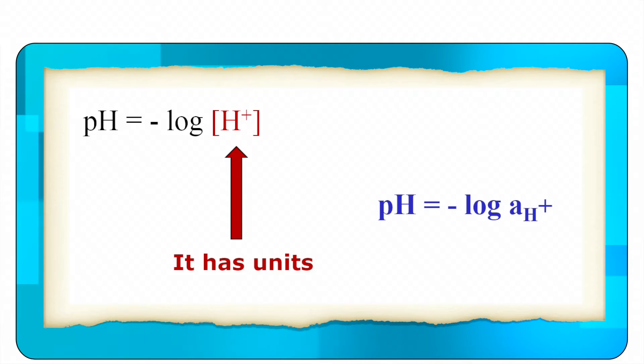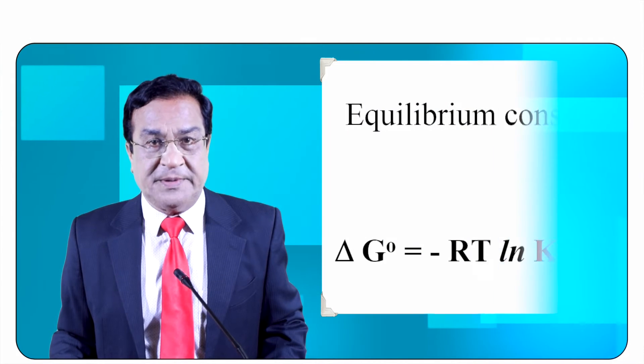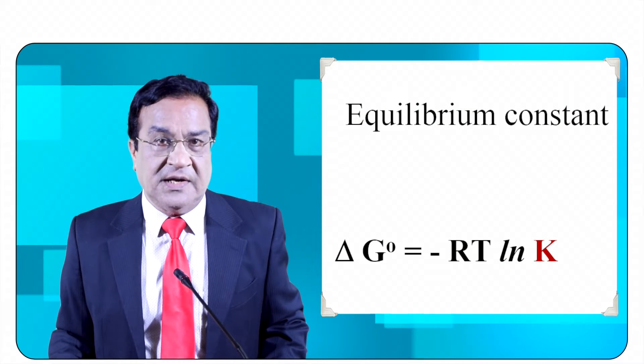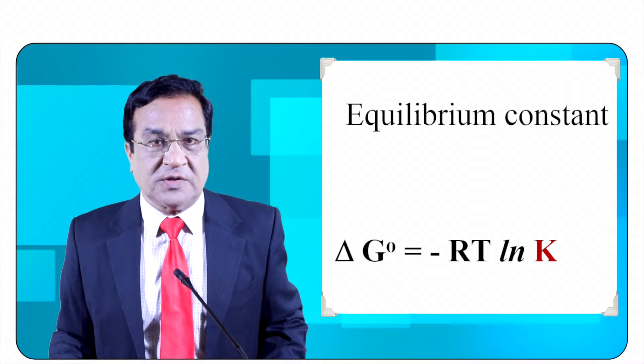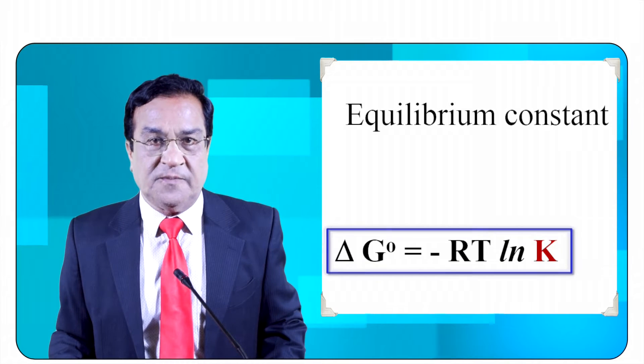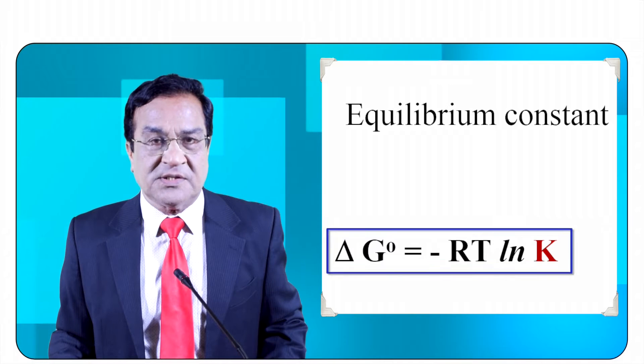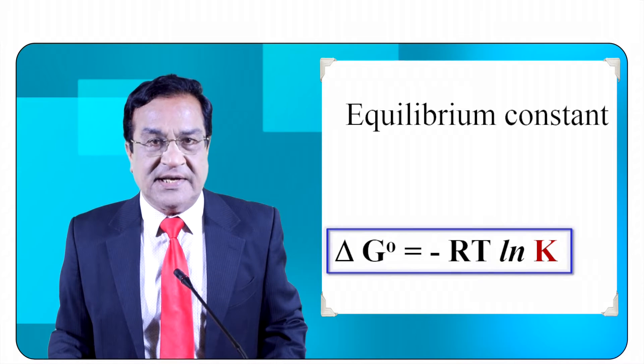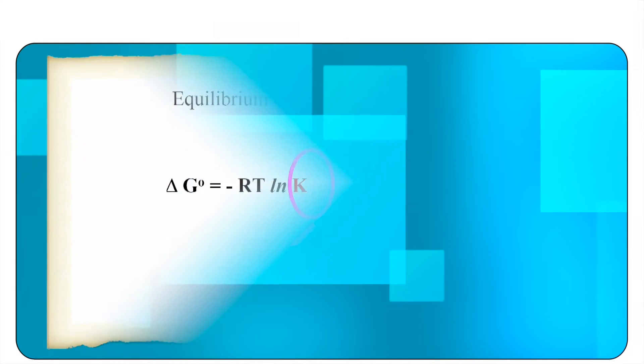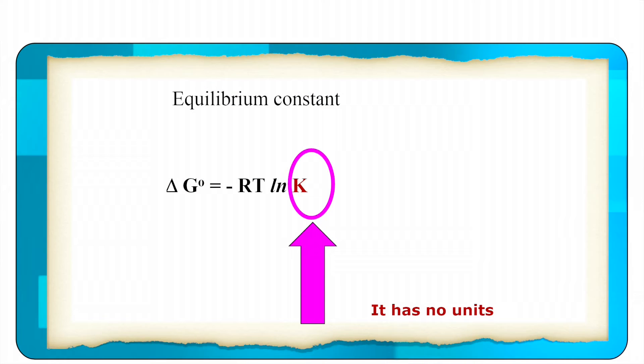Similarly, we often talk about equilibrium constant and link equilibrium constant to ΔG⁰ by the relation ΔG⁰ equals minus RT ln K. Again here you can see ΔG⁰ has the units of energy. RT has also the units of energy.